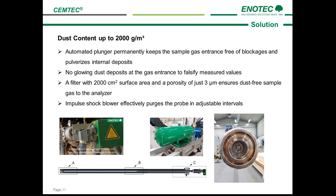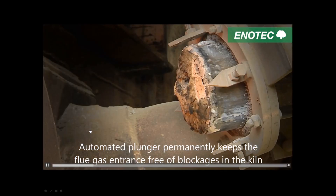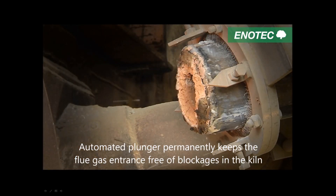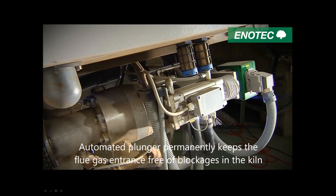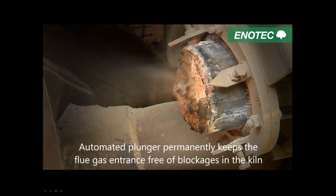Another difficult challenge to overcome is the extremely high dust content of around two kilograms per cubic meter inside the kiln. The combination of high temperatures and high dust concentration makes this a difficult application. CEMTEC has an automated plunger which permanently keeps the flue gas entrance free of blockages and pulverizes deposits within the probe. Blockages will falsify the measured values of O2 and CO. Here is a short video showing the plunger in operation.